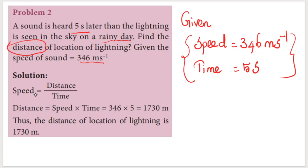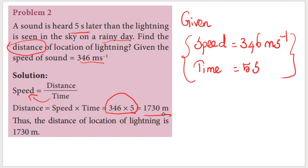From the formula speed = distance / time, we rearrange to get distance = speed × time. Speed = 346, time = 5 seconds. So distance = 346 × 5 = 1730 meters. Very simple.